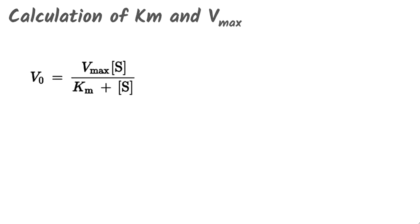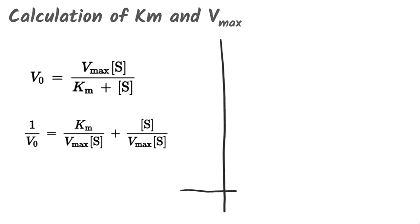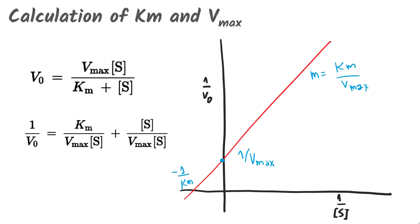The Michaelis-Menten equation can be algebraically transformed into equations that are more useful for plotting experimental data. One common transformation is derived simply by taking the reciprocal of both sides of the Michaelis-Menten equation. This form of the equation, called the Lineweaver-Burk equation, has the great benefit of allowing a more accurate determination of Vmax and Km, which can be only approximated from a simple plot V0 versus S.